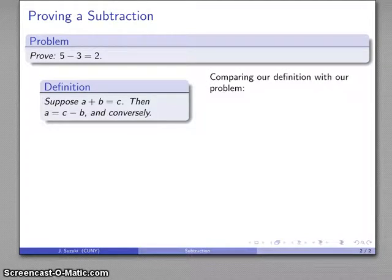And I'll compare the definition that we have with the subtraction we want to prove, 5 minus 3 equals 2. And by comparison of the two statements, I see that c is 5, b is 3, and a is 2.